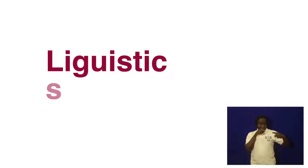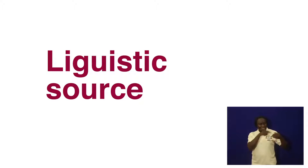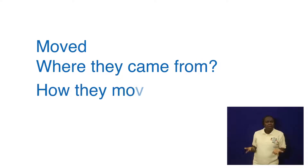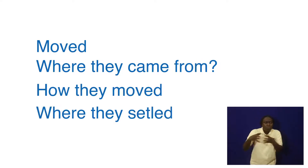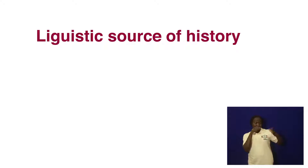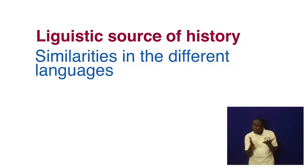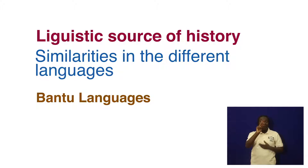The first source of history I am going to talk about is the linguistic source. In this source, we study human languages, and we think of the way these people move — for example, where was their origin, where did they come from, how did they move, and where did they settle. So when we are talking about the linguistic source of history, we study the similarities in the different languages.